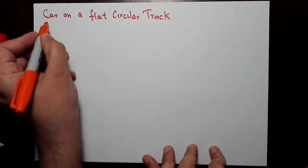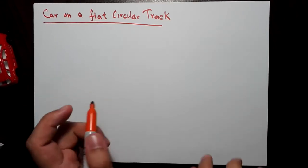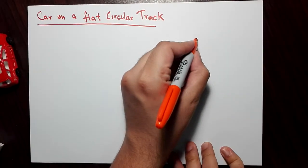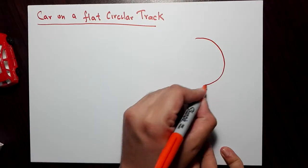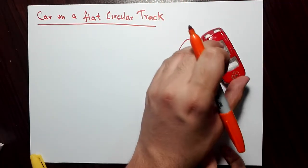Hey guys, so let's discuss the problem of a car moving on a flat circular track. So you have a circular track in this problem, and the car, let's say this car, is moving on the circular track.